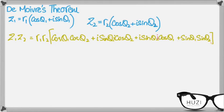So the result would be R1 into R2, and in the bracket we'd have cos θ1 cos θ2 plus i sin θ1 cos θ2 plus i cos θ1 sin θ2, and then finally sin θ1 sin θ2.